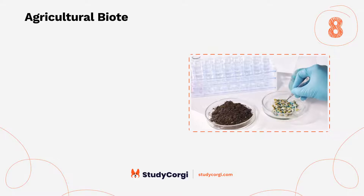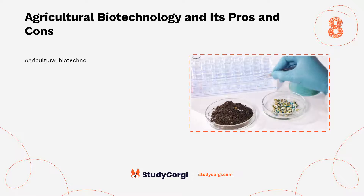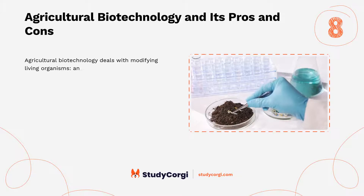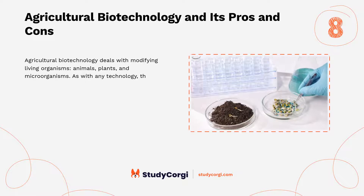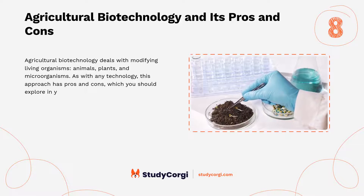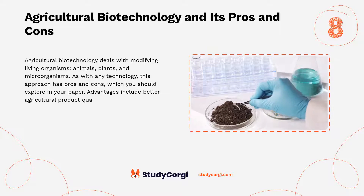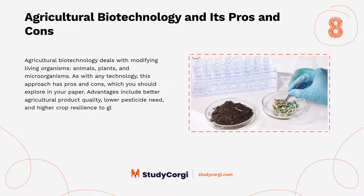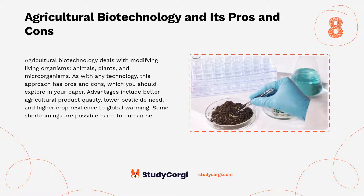Agricultural biotechnology and its pros and cons. Agricultural biotechnology deals with modifying living organisms — animals, plants, and microorganisms. This approach has pros and cons which you should explore in your paper. Advantages include better agricultural product quality, lower pesticide need, and higher crop resilience to global warming. Some shortcomings are possible harm to human health.